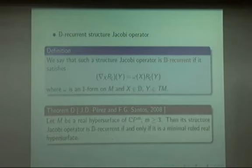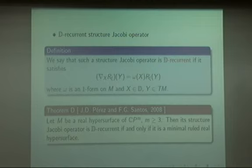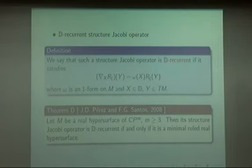Moreover, they defined a new notion: the D-recurrent structure Jacobi operator. The structure Jacobi operator is called D-recurrent when it satisfies this condition for X belonging to the holomorphic distribution D. Using this notion: M is a real hypersurface of complex projective space, then its structure Jacobi operator is D-recurrent if and only if M is a maximal ruled real hypersurface.